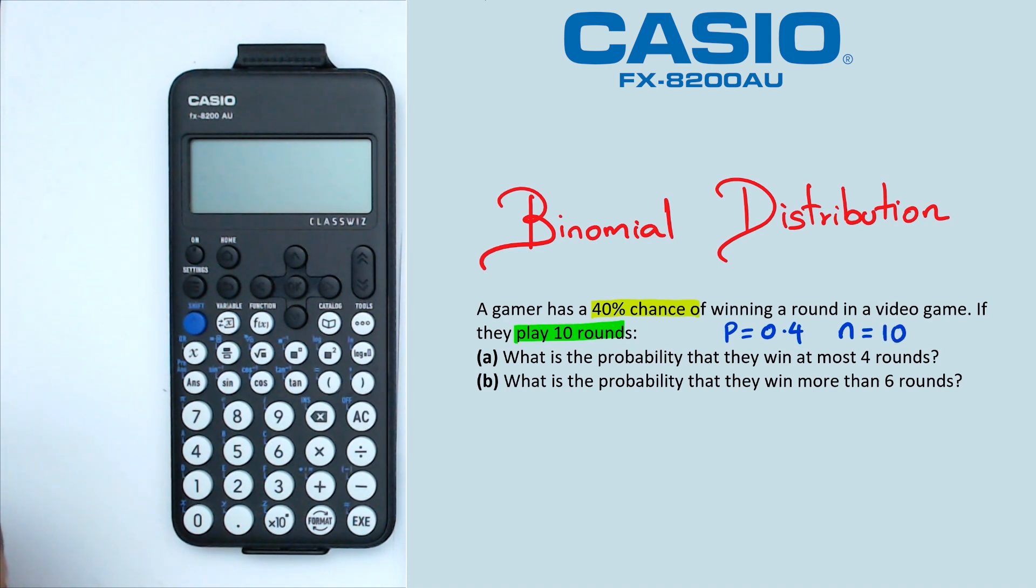Now if we look at the first question, the first question is asking for winning at most four rounds. So that means we are looking for a probability of x less than or equal to 4.